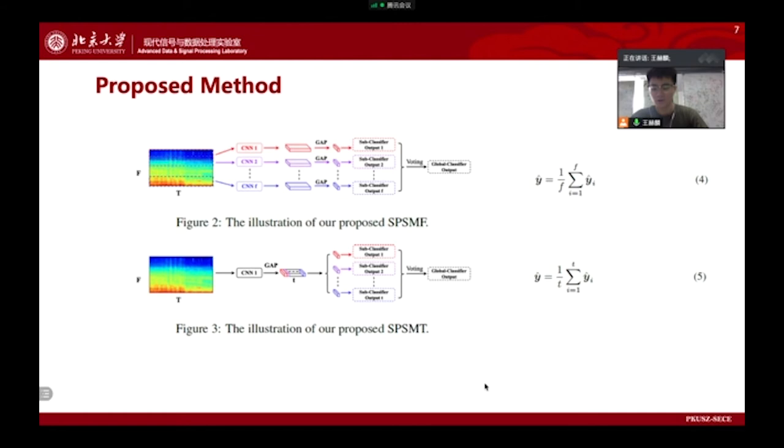In this paper, a spectrogram processing strategy in multiple temporal frames, called SPSMT, is proposed, which feeds the whole audio clip to the network and makes decisions on each temporal frame after CNN. Therefore, the decision made by each frame could take into account the information of neighboring frames, as shown in Figure 3. For the final feature map, global average pooling is applied to the frequency bands, and the classifier is then applied to each temporal frame.